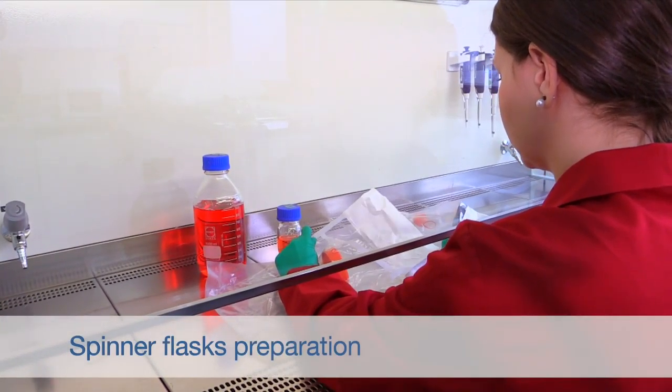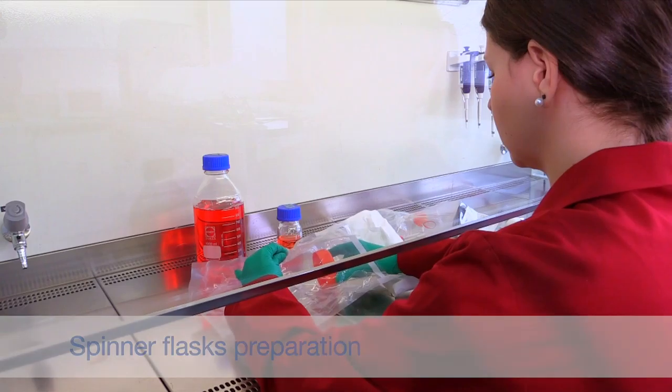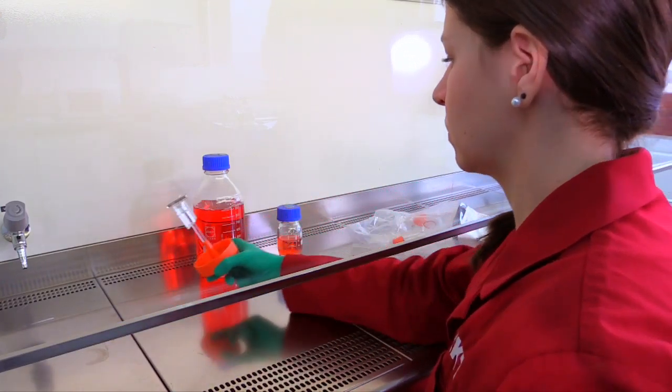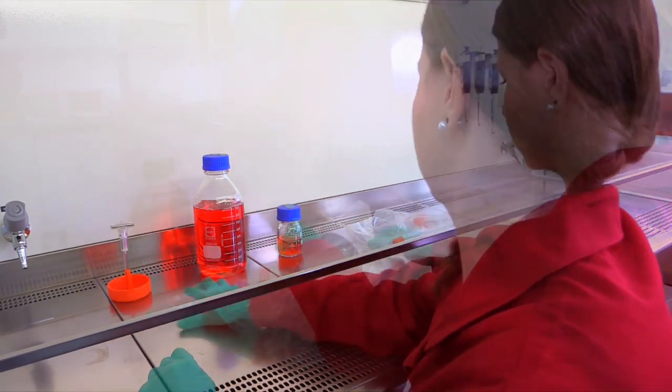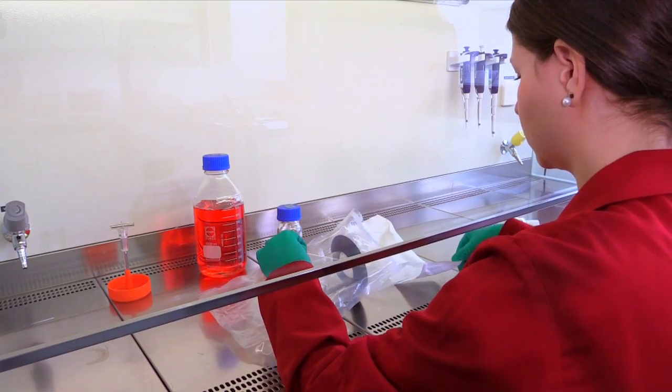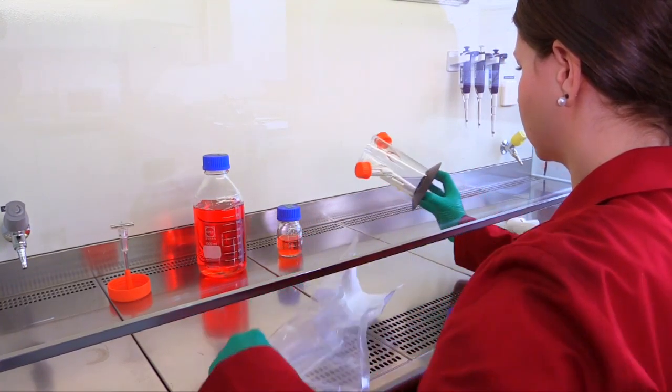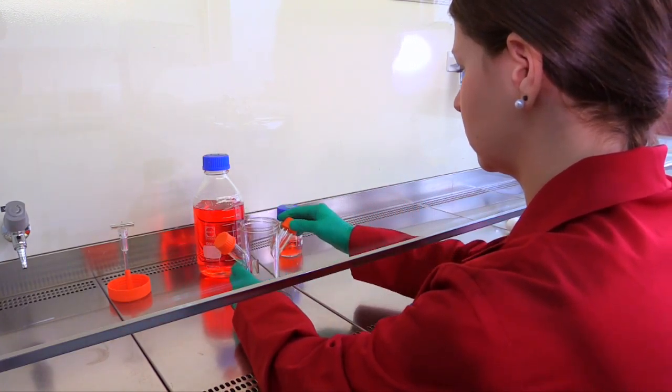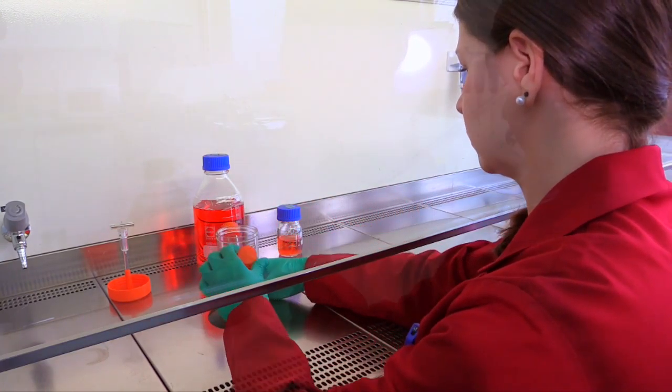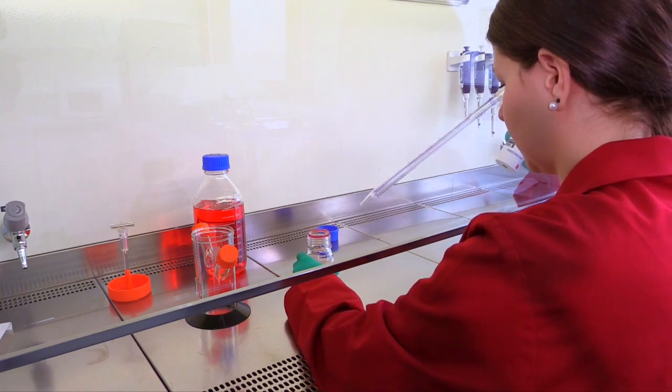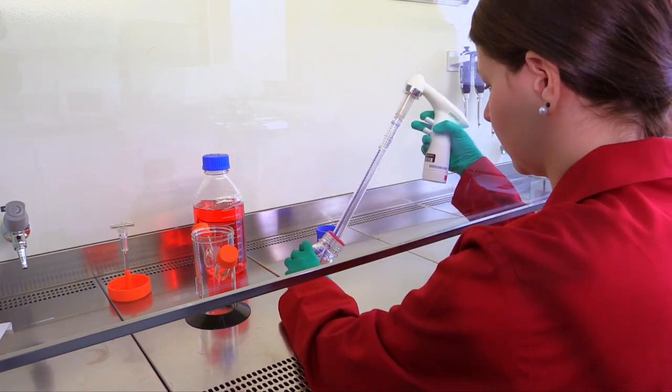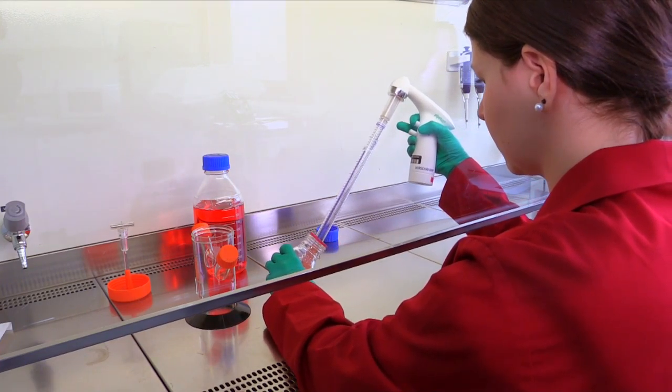Afterwards, the spinner flasks can be unpacked in the laminar flow bench and filled with microcarriers and medium. The working volume of every spinner flask is 100 milliliters.